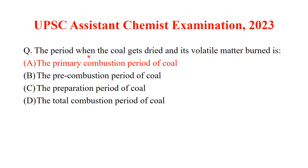The period when coal gets dried and its volatile matter burns — the answer is the primary combustion period of coal. Coal combustion takes place in two steps. The first step is known as the primary combustion period, in which volatile matter is burned and it leads to the formation of coke.